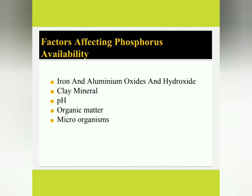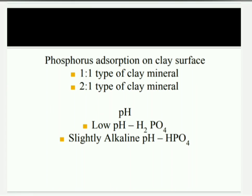These oxides also exist as coatings on other soil particles. Clay mineral — 1:1 type clay mineral, kaolinite, develops positive charges at the broken edges in acid soil. These positive charges attract the negatively charged phosphorus ion, so the phosphorus ion is adsorbed on the clay mineral and becomes unavailable to plants.